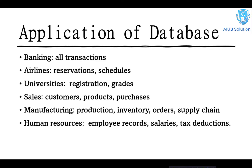In manufacturing, production, inventory, orders, and supply information can be easily stored in a database. In human resources, employee records, salaries, and tax deductions can be stored very easily. If we tried to store all this information manually, it would take a lot of time and be very difficult to do accurately. This is all about the basic concept of database.